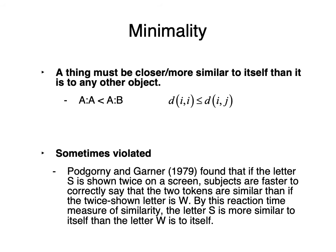These three core assumptions of the geometric model are minimality, symmetry, and triangle inequality — they come directly from the assumption that psychological space is an analog for physical space. Minimality means a thing must be more similar to itself than to any other object. The distance between A and A has to be lower than the distance between A and B. There's nothing closer to you than yourself.